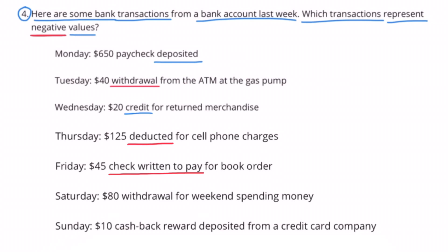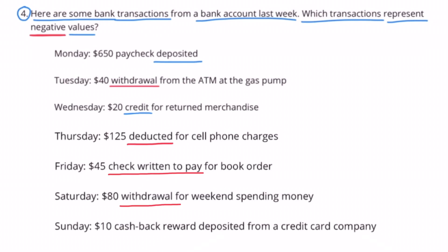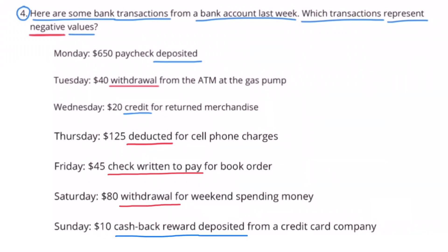And the money would be taken out of the account. Saturday, $80 withdrawal for weekend spending money. That's also a negative because $80 was withdrawn, which means money is taken out of the account. Sunday, $10 cash back reward deposited from a credit card company. That's a positive because $10 cash was deposited into the account.